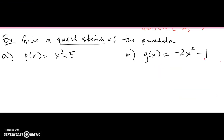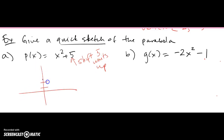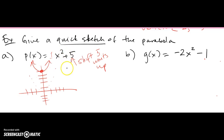Let's show some more examples — give a quick sketch of the parabola. For this one, it's just the x² parabola with an added 5, which means shift 5 units up. Since the leading coefficient is a positive 1, it opens up. The vertex was at (0, 0) and shifts up 5 units to (0, 5). A quick sketch of this parabola has vertex (0, 5) opening upward.